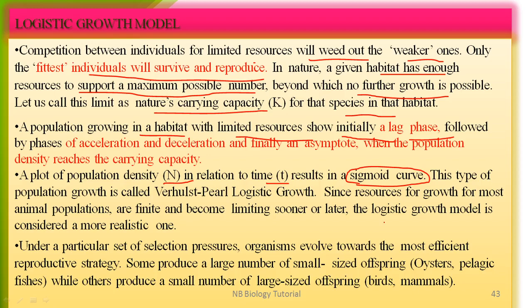Since resources for growth of most animal populations are finite and become limiting sooner or later, the logistic growth model is considered a more realistic one. Under a particular set of selection pressures, organisms evolve towards more efficient reproductive strategies — some produce a large number of small-sized offspring, such as oysters and pelagic fish, while others produce a small number of larger-sized offspring, such as birds and mammals.